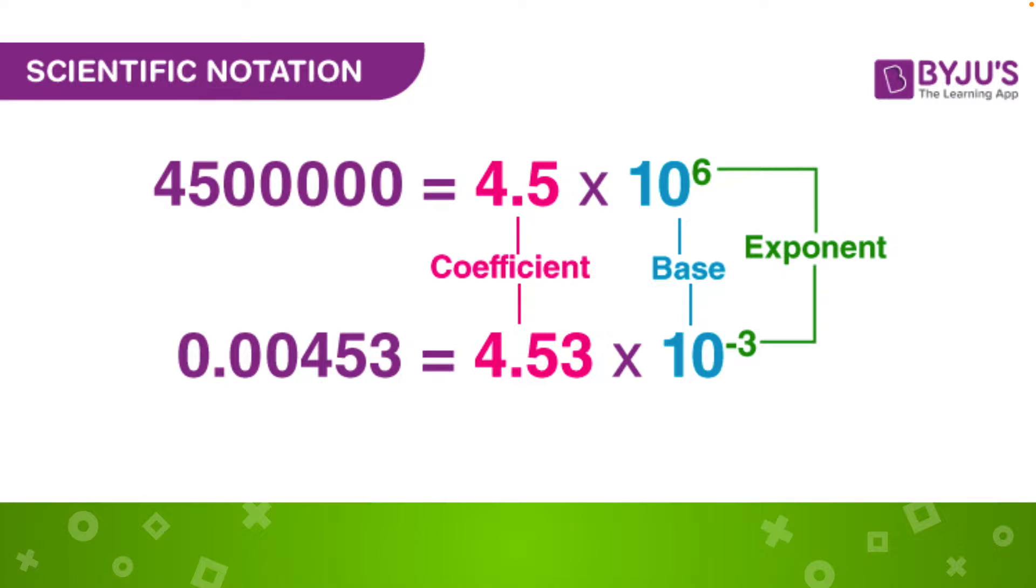Okay, so here we have two examples of scientific notation. You can see we have a very large number and we have a very small number. So this is two examples of why we would use scientific notation.